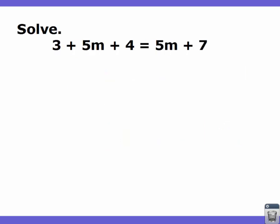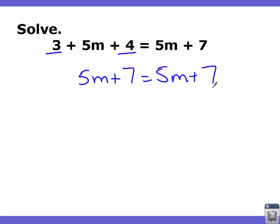Now let's look at one more. What if I were to give you something like this? Sometimes when you see questions in this fashion, you can actually do some simplifying before you begin. If when you look at these problems you notice anything that can go together, go ahead and put it together. You'll notice that this 3 and this 4, I could actually put that together. So if I do so, I end up with 5m plus — well, 3 plus 4 is 7 — equals 5m plus 7.